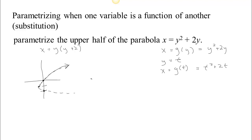Since we only want the upper half, we let y equal t and x equal t squared plus 2t, and we make sure the y values are increasing. We start at a value of t equals negative 1, and then let t keep going upward. That ensures we move along the upper portion of the curve.